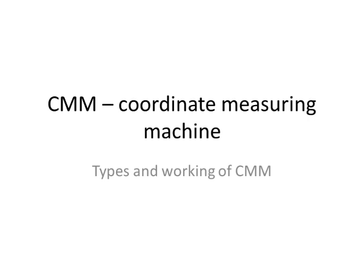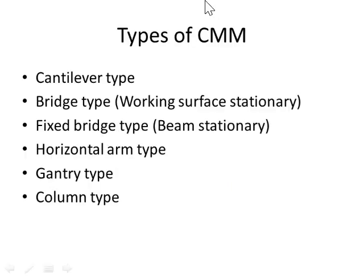Good evening. In this video we are going to discuss about CMM. CMM means Coordinate Measuring Machine — the name itself gives you the explanation, as it measures coordinates. It can move in all directions, and we will discuss how it moves and what its uses are. We are going to discuss the types and working of CMM.